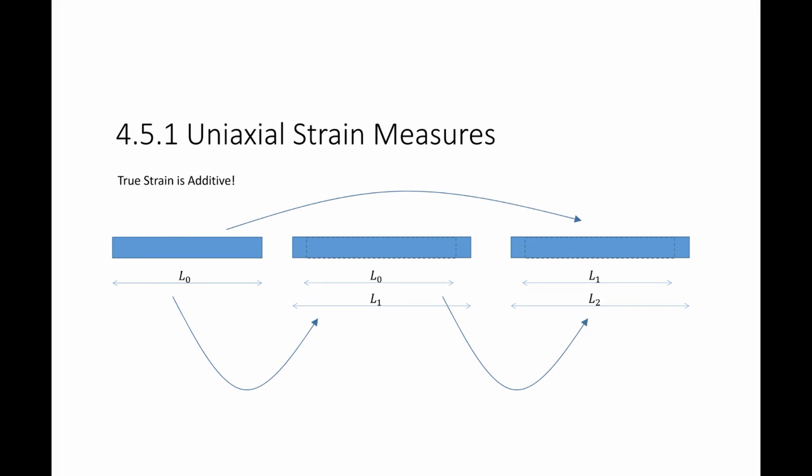Each measure has its advantage and disadvantage. One advantage of the true strain measure is that it's additive. So if I have three states, in the first state a bar changes its length and becomes L1, and in the second state it changes its length and becomes L2, then I can calculate the strain between state 1 and state 2, or between state 2 and state 3, or between state 1 and state 3, and if I use the true strain measure then it becomes a very simple calculation as we will see in the next slide.